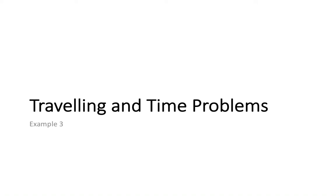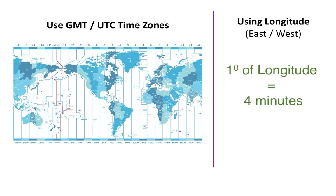This video is going to look at solving problems involving different time zones and travelling. Before we look at the example, remember the two different ways that we can calculate different time zones. The first is the GMT/UTC time zones, where every city is divided up into a time zone depending on its location from the zero origin, which contains the Greenwich Meridian line.